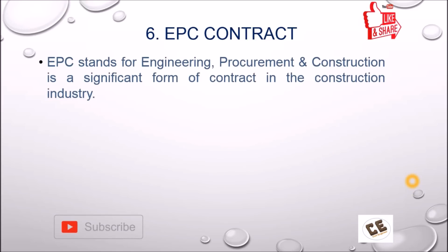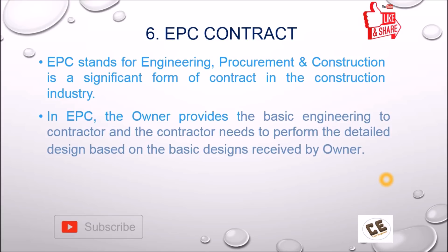The next type is the EPC contract. EPC stands for Engineering, Procurement, and Construction. It is a significant form of contract in the construction industry. In this type of contract, the contractor handles the engineering, procurement, and construction — meaning all designs, consultancy, and construction are done by the contractor. The owner provides the basic engineering to the contractor, and the contractor performs the detailed design based on those basic designs, as well as handling procurement and construction.